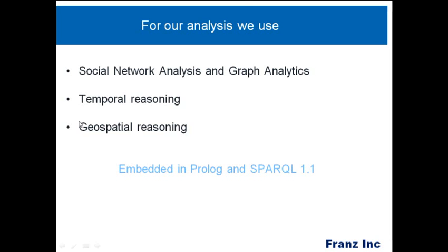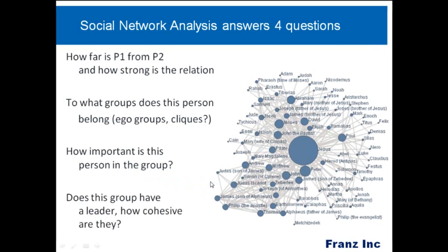We have about 20 to 30 functions for social network analytics answering the four most important questions: how far is account 1 from account B and how strong is the relationship? What groups does a person belong to — from a simple ego group like friends of friends, to fully connected groups like a clique? How important is a particular person in a group? We have about four measures in AllegroGraph to compute the importance of a person in a group. And finally, you can figure out if a group has a leader or not, and we have a number of measures for that.